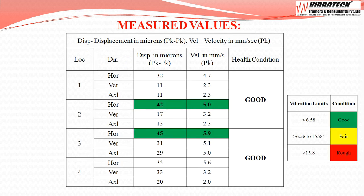Vibration data are collected. The maximum values are at motor drive end horizontal — velocity up to 5.0 mm per second peak with displacement of 42 microns peak to peak — and at pump drive end horizontal, velocity up to 5.9 mm per second peak with displacement of 45 microns peak to peak. The equipment health condition is good.